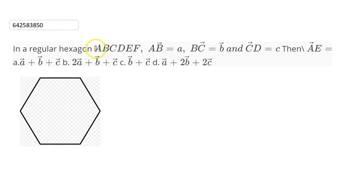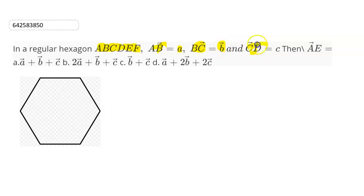In this question we have been given that in a regular hexagon ABCDEF, AB vector is a vector, BC vector is b vector, and CD vector is c vector. We have to find the value for AE vector from the given options.